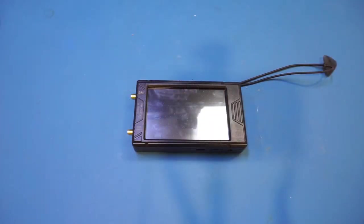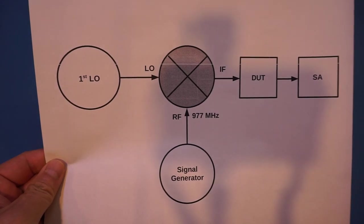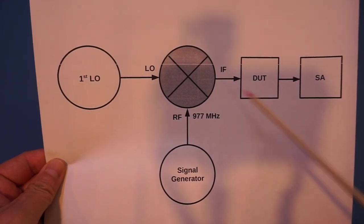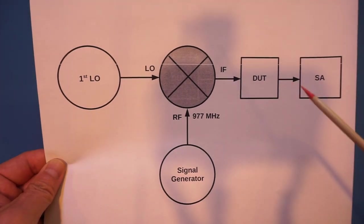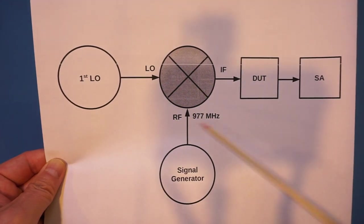Now you understand why we need a tracking generator. Now let's see how we can make one. Well, the basic principle behind the tracking generator is rather simple. The tracking signal can be obtained by subtracting the IF frequency from the LO using a mixer.